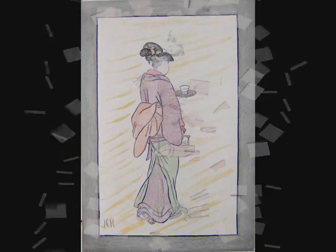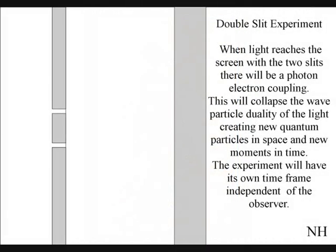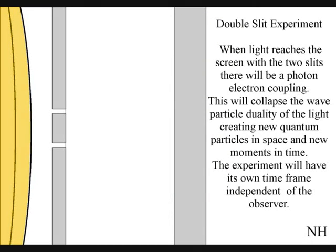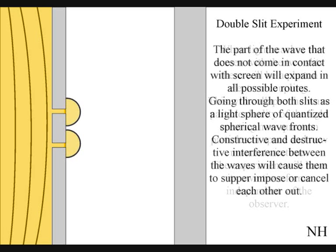The best way to see this happen directly with light is in the two-slit experiment. When the light reaches the screen with the two-slits, the photons will react with the electrons of the screen. This will collapse the wave particle duality of the light, creating new quantum particles in space and new moments in time. The part of the wave that does not come in contact with the screen will go through both slits.